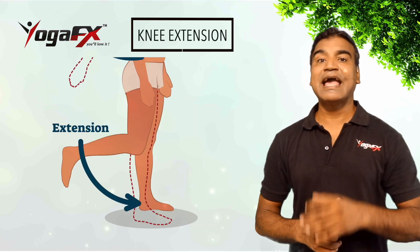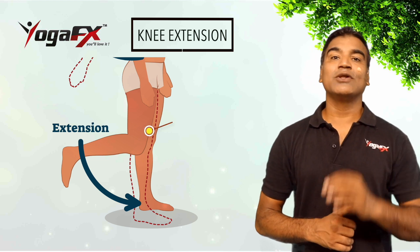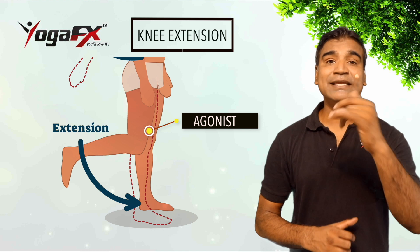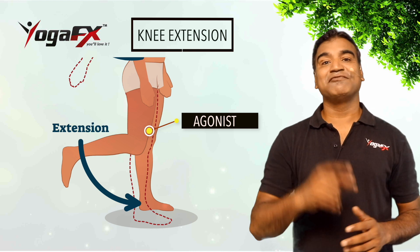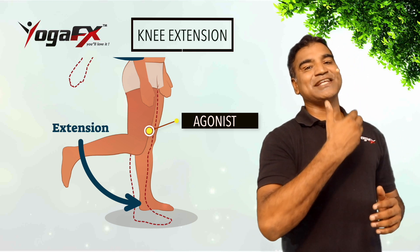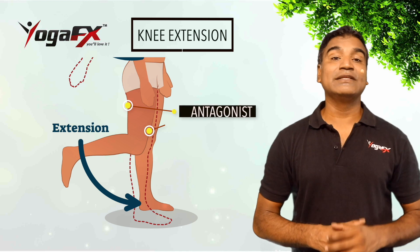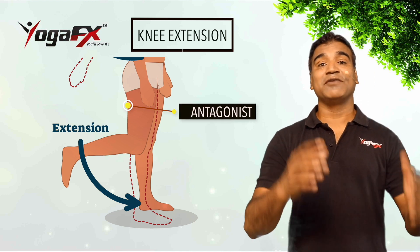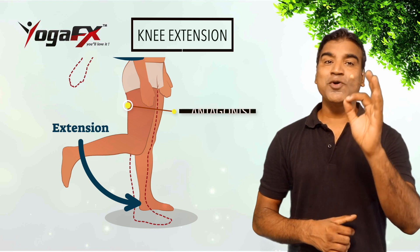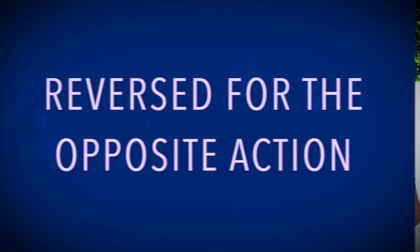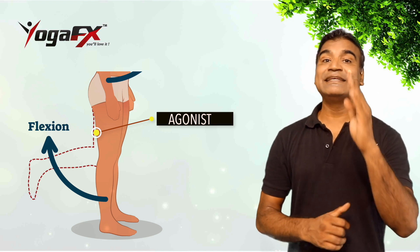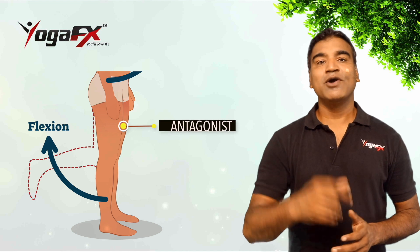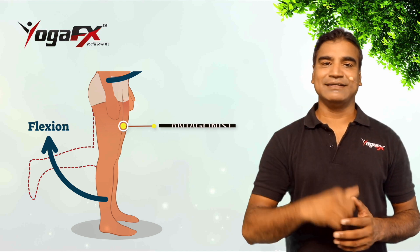For example, to extend the leg at the knee, a group of four muscles called the quadriceps femoris in the anterior compartment of the thigh are activated and would be called the agonist for leg extension at the knee. A set of antagonists called the hamstrings in the posterior compartment of the thigh are activated to slow or stop the movement. These terms are reversed for the opposite action — flexion of the leg at the knee — in which case the hamstrings would be called the agonist and the quadriceps femoris would be called the antagonist.